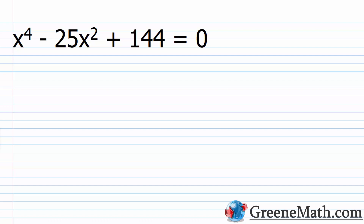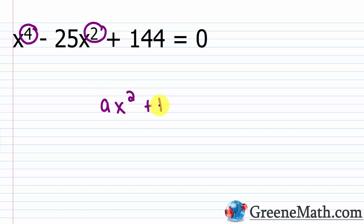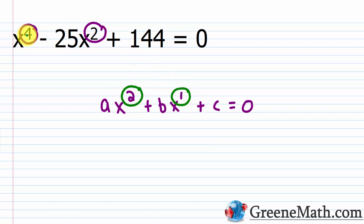Let's take a look at the first example: x to the fourth power minus 25x squared plus 144 equals zero. Notice how the smaller exponent on x is two and the larger exponent is four. In a standard quadratic ax² + bx + c = 0, the larger exponent is double the smaller — it's the same pattern here. We also have a constant, so we can say this equation is quadratic in form.